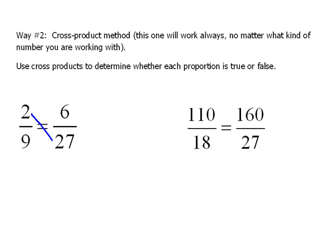The cross-product means we would have to find the product of the diagonal here. So, what we're saying is 2 times 27, hopefully, is equivalent to the other cross-product, or 9 times 6. So, now we can multiply these out. 2 times 27 is 54, and 9 times 6 is 54. So, their cross-products are equal. Therefore, the entire thing is equal. And that is a true proportion.